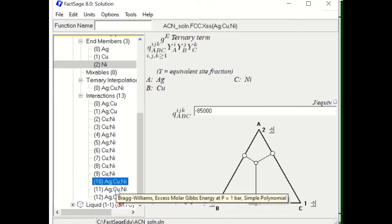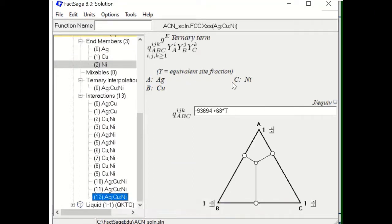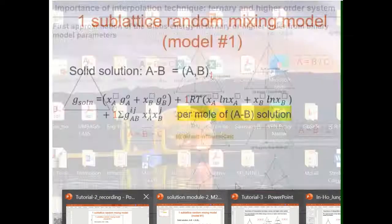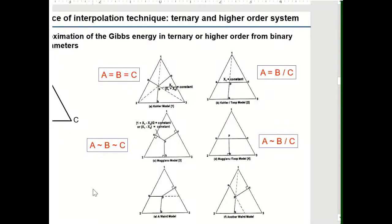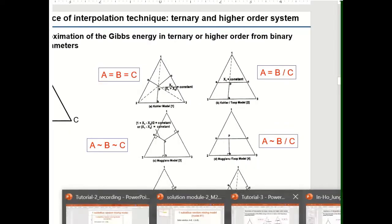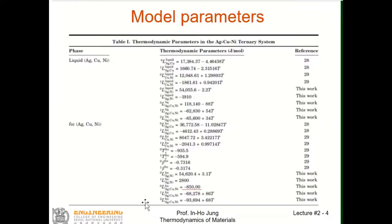Looking at the parameter table again, you can see the FCC L0 and L1 parameters for each binary system and then the ternary parameter. By the way, the L0 ternary parameter value looks a bit strange — it says minus 85,000, but I think the comma is in the wrong place, so it is simply 85,000 Joules per mole. That is what is added in the database.